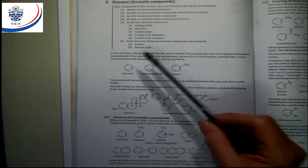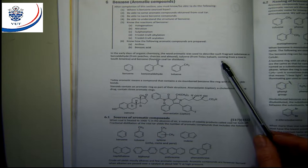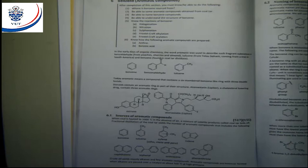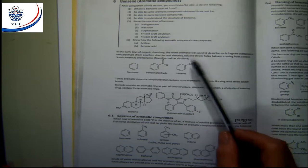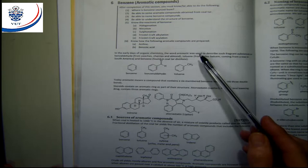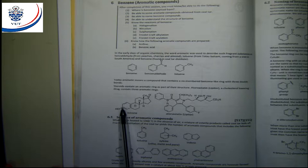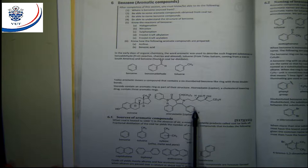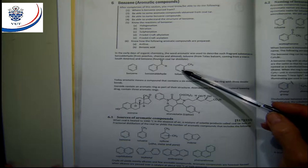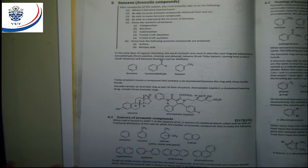Benzaldehyde is found in peaches, cherries, almond, toluene from the tolu balsam tree, and so on. All of them had fragrances, and people called them aromatic compounds. After they started identifying the compounds and seeing what was in them, it was found that all these compounds contain a benzene structure. So instead, we started referring to aromatic compounds as benzene, and today we do not really think about fragrances when we talk about aromatic compounds.